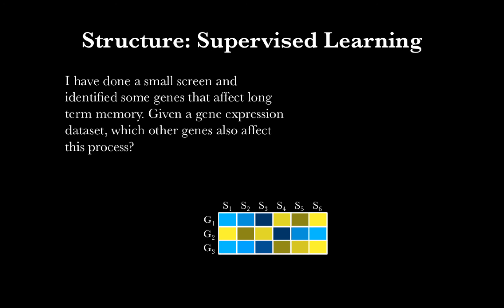Let's go back to our first example and talk about the structure of the problem, and learn some key vocabulary related to supervised learning. Remember, we've done a small screen and we've identified some genes that affect long-term memory. We also have a gene expression data set, which we'd like to use to predict which other genes also affect this process.